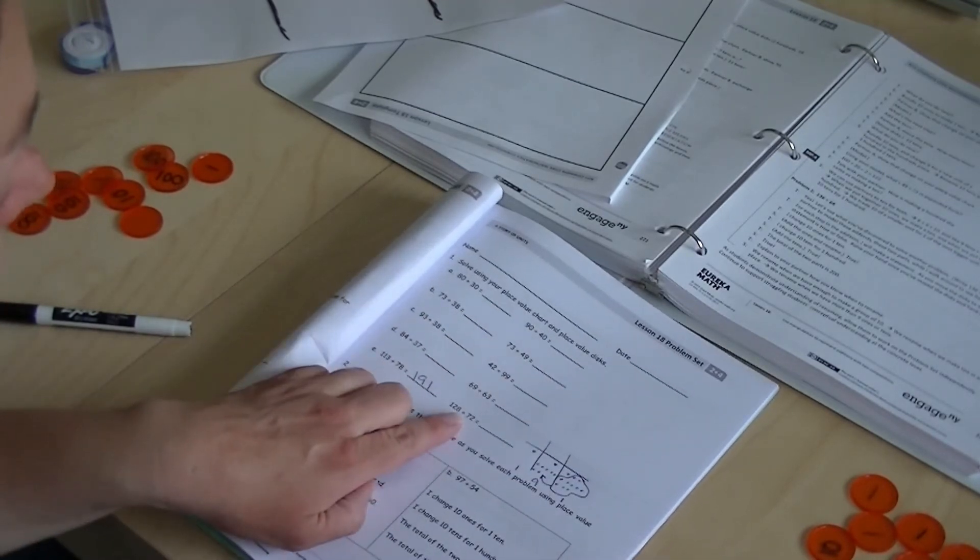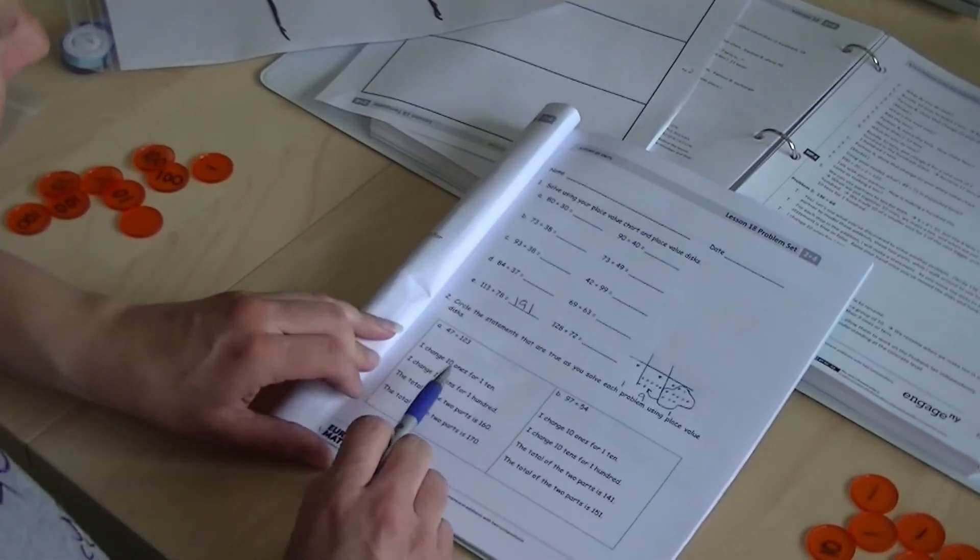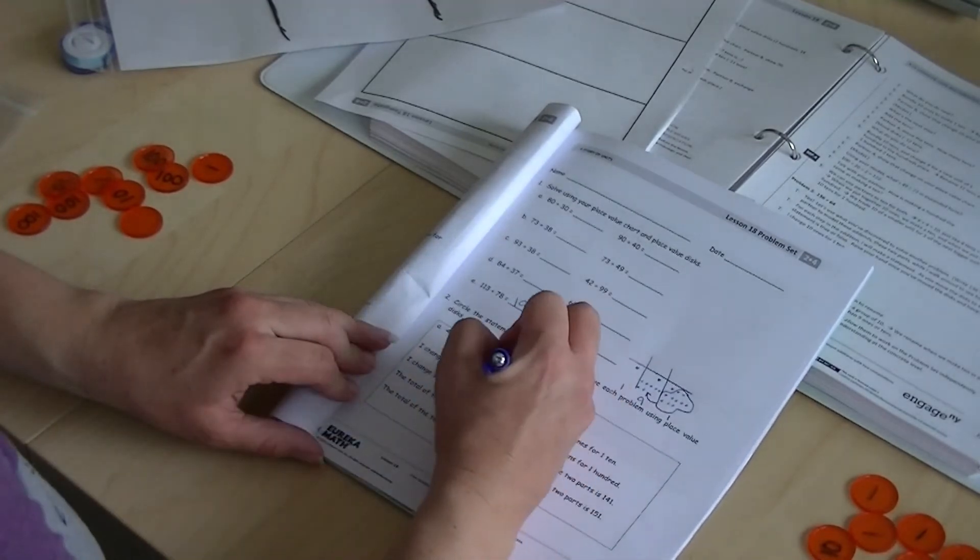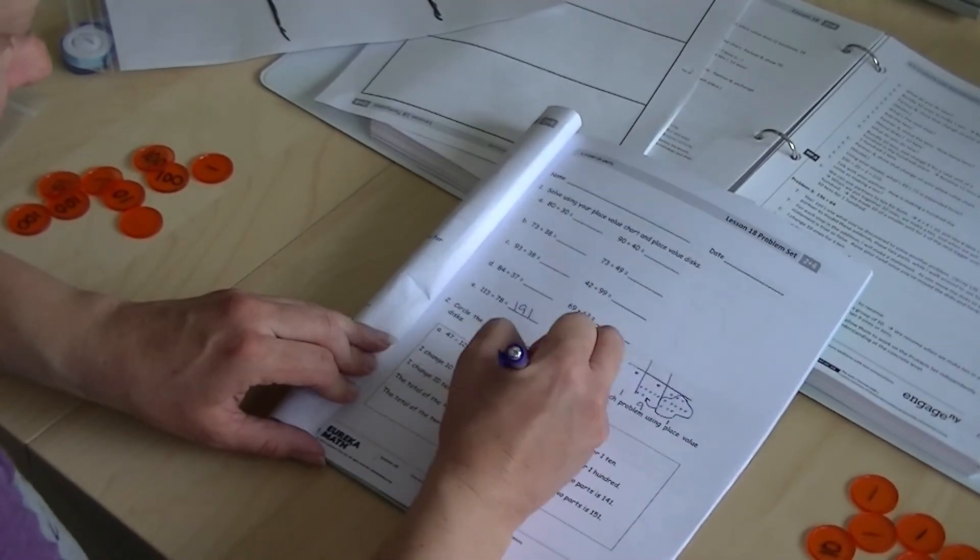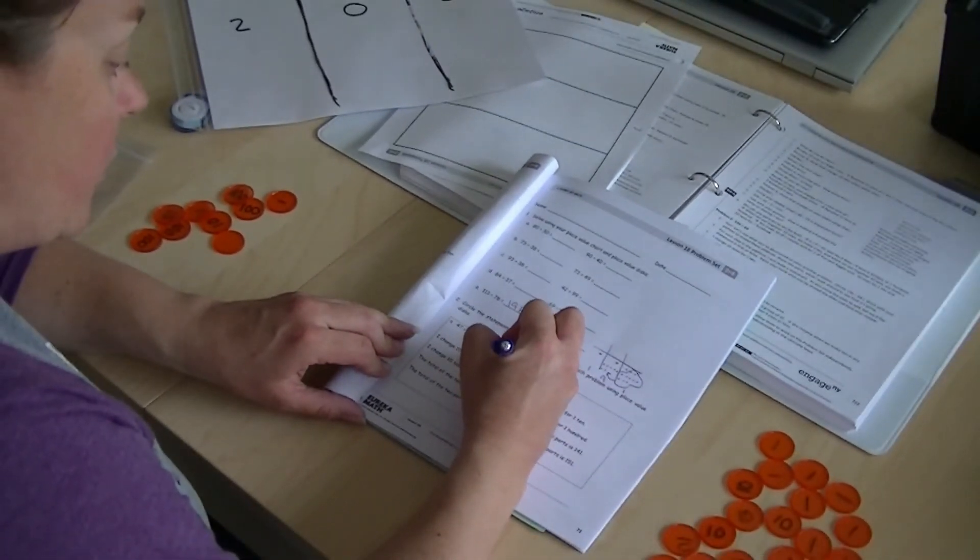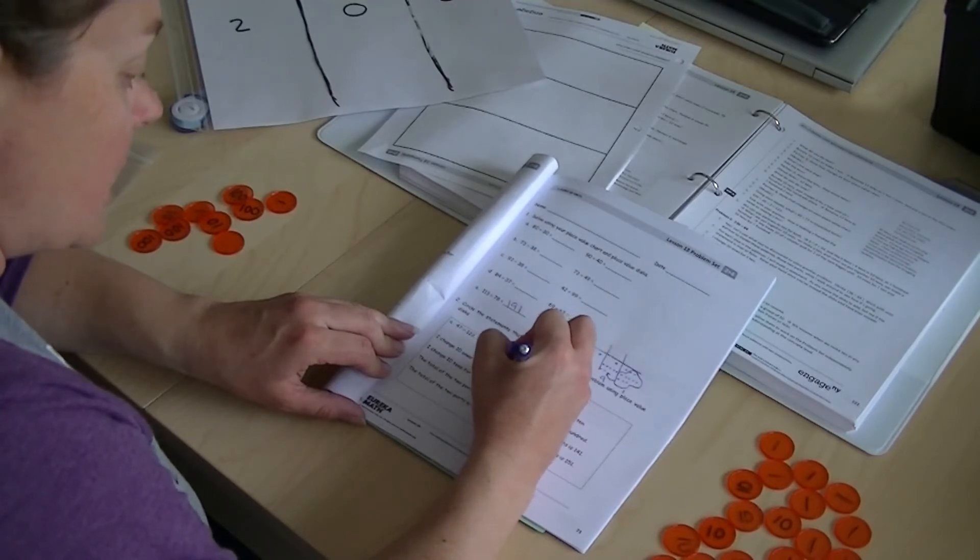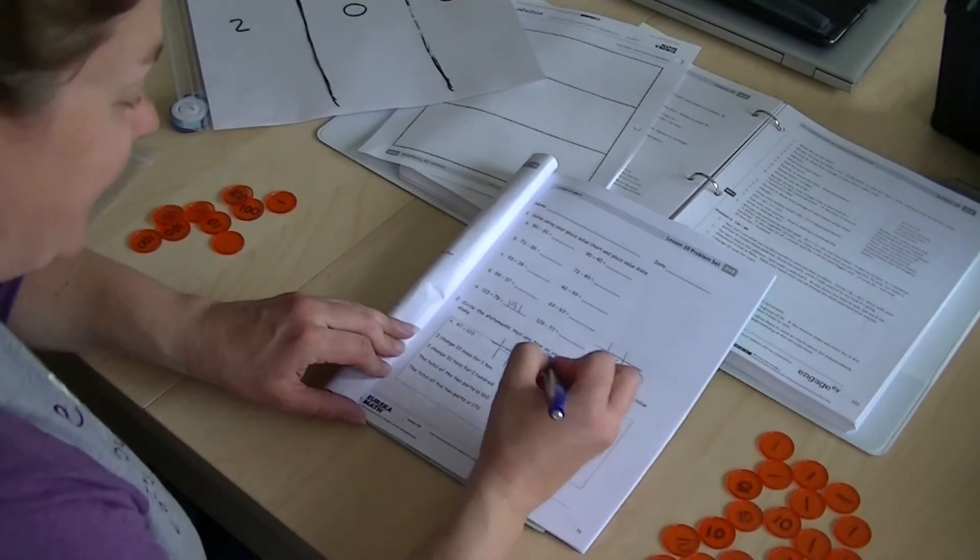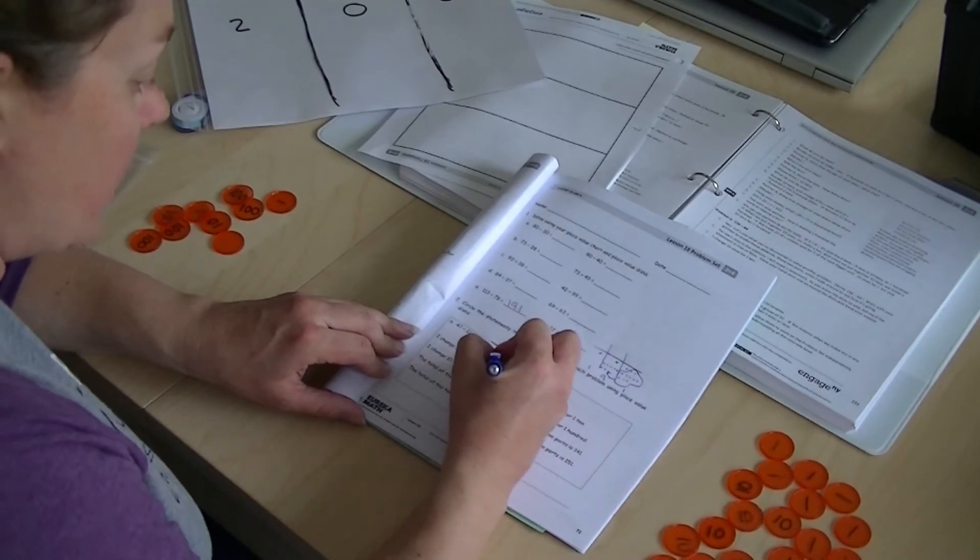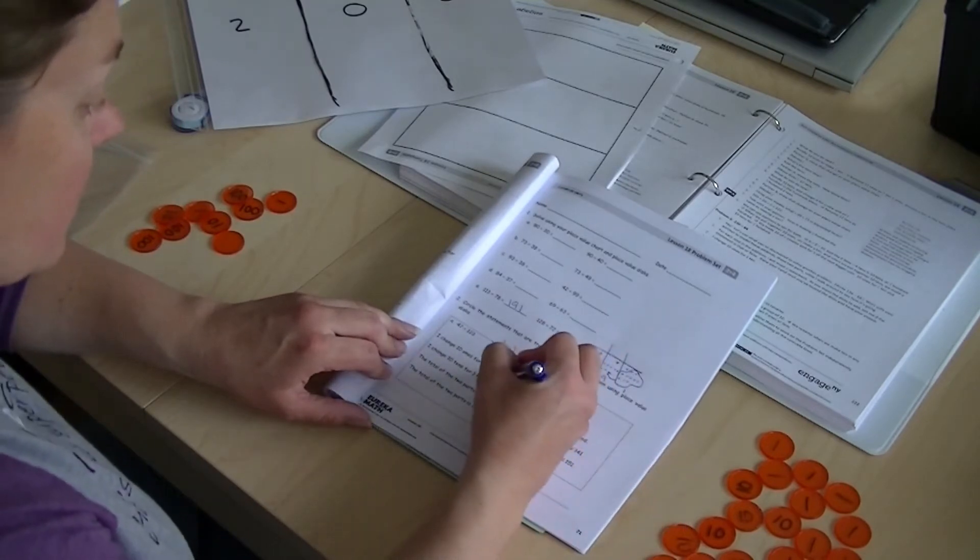All right, you can try this one. Try the others on your own. Over here, you're going to do the discs. So what we would do is you would draw this out. We have 47. Okay. Plus 123.